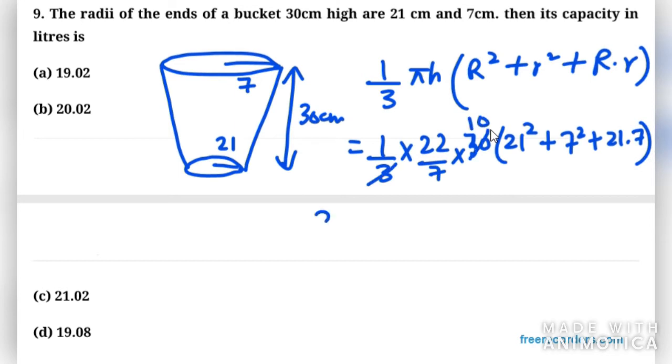So 220/7 in bracket: 21 square that is 441, 7 square is 49, plus 21 into 7 is 147.